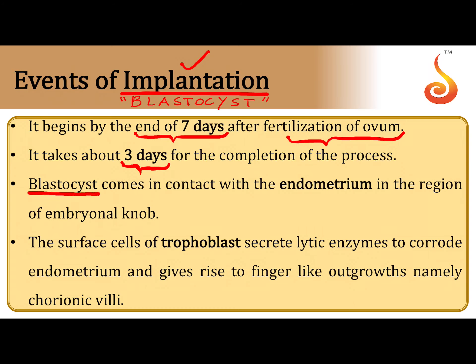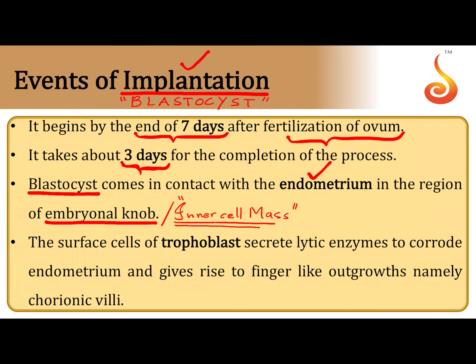The hollow embryo, the blastocyst, which attaches to the endometrium, first comes in contact with the endometrium at the region of the inner cell mass, also called the embryonal knob. This portion of the blastocyst touches the uterine endometrium, and then the trophoblast — the outer layer of the blastocyst — helps in the process of implantation, forming finger-like projections called chorionic villi.